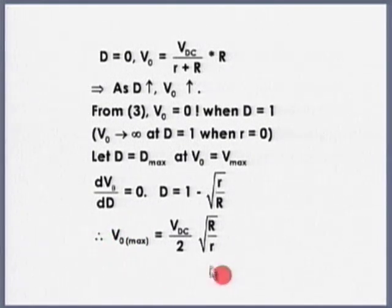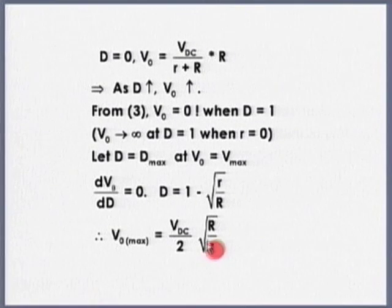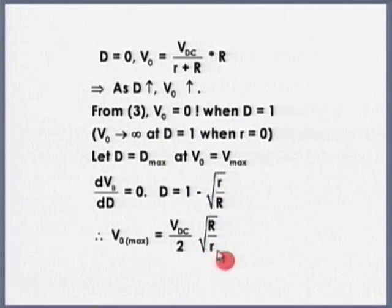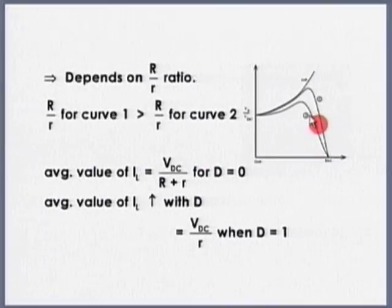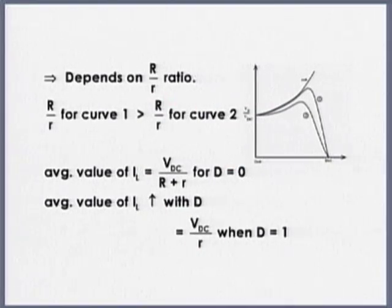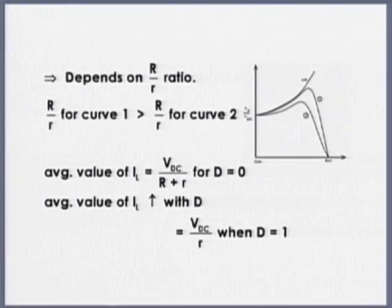To reduce the winding resistance R and increase the quality factor of the inductor, I will show you two different inductors with the same value of L and the techniques used to reduce the effective winding resistance. As a thumb rule, the maximum voltage ratio we can achieve is about 8 to 10. If you want to boost the voltage by a factor of 8 or so, you can use the conventional boost; otherwise we need alternative solutions.